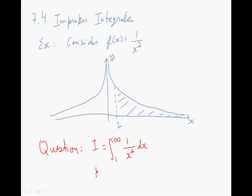So as a first step, we're going to find i is equal to the integral from 1 to a, 1 over x squared dx.